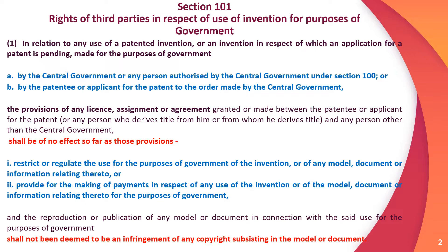In both cases, if the use is made for the purposes of government — either by the central government, any person authorized by the central government, or by the patentee or applicant to the order of the central government — then the provisions of any license, assignment, or agreement granted or made between the patentee or applicant and any person other than the central government shall be of no effect.